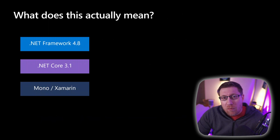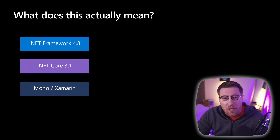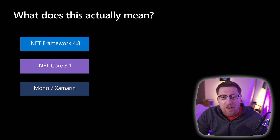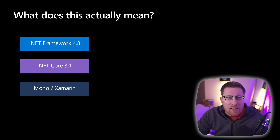But of course we have three frameworks today: .NET Framework, .NET Core, and then Mono/Xamarin. So the question is, when we have this animation, what actually happens to those?